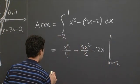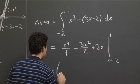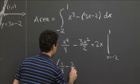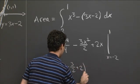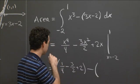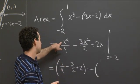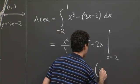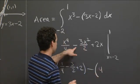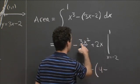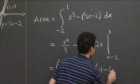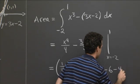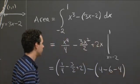So this is equal to 1 fourth minus 3 halves plus 2 minus—okay, now I put in minus 2. I get minus 2 to the fourth is 16 over 4, so that's minus 4. Okay, minus 3 times 4 over 2 is 6, and then plus 2 times minus 2 is minus 4 again. Okay.